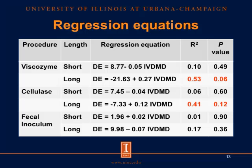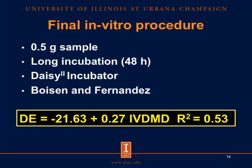Based on these results, we were able to come up with a final in vitro procedure. The final in vitro procedure makes use of 0.5 grams of sample, requires a 48-hour incubation time, requires the use of a DAISY incubator, and follows the Boyce and Fernandez procedure. Based on this final in vitro procedure, we were able to come up with a regression equation that is able to explain 53% of the variability in DE in these corn samples.